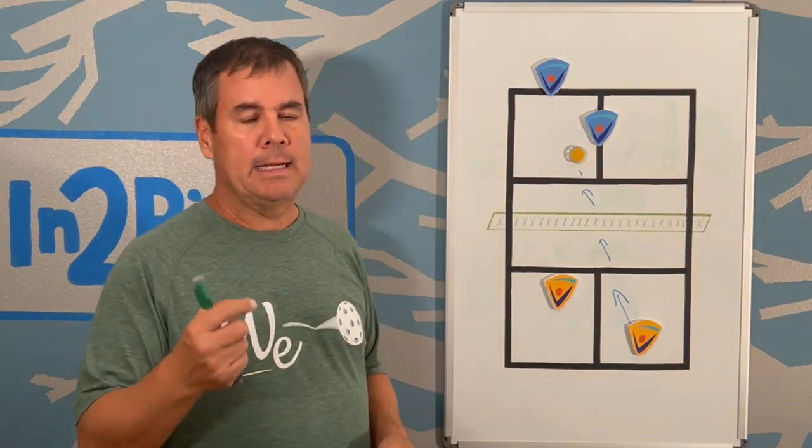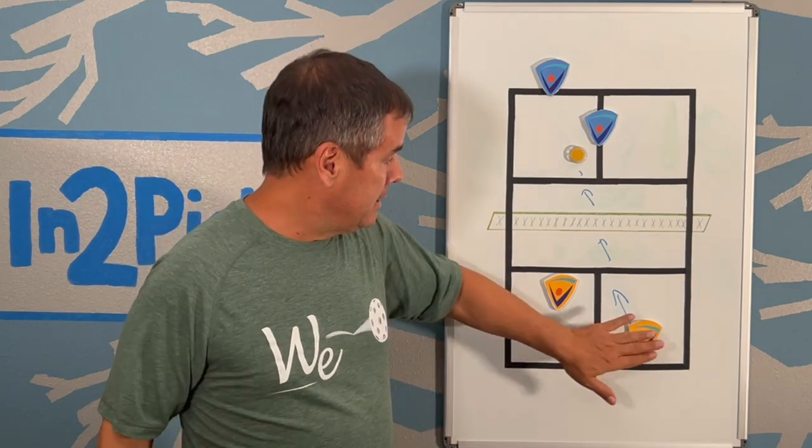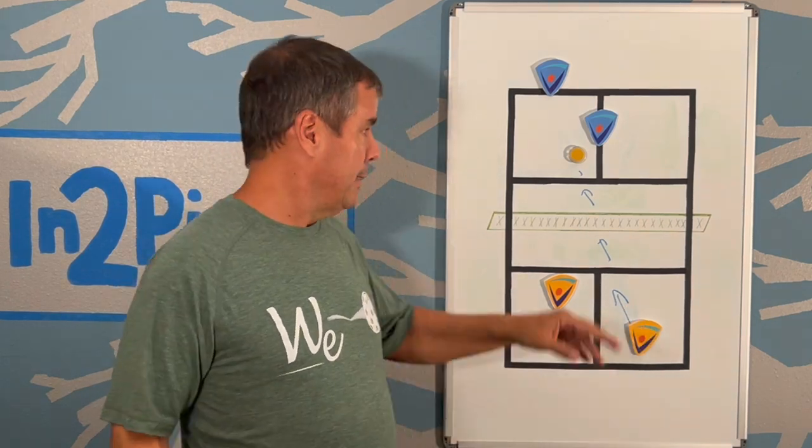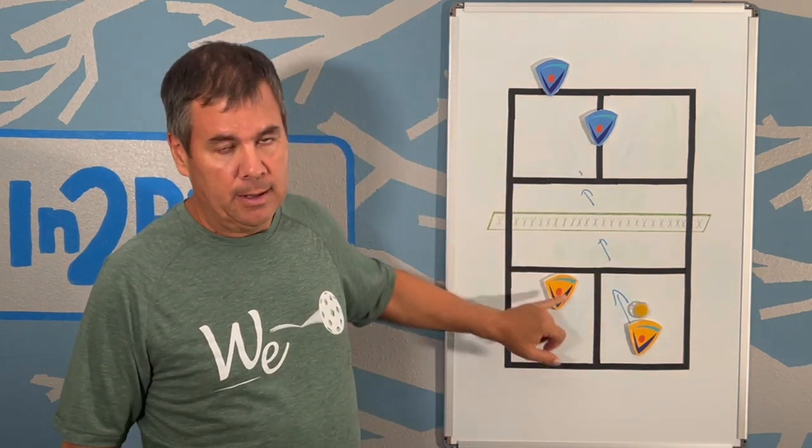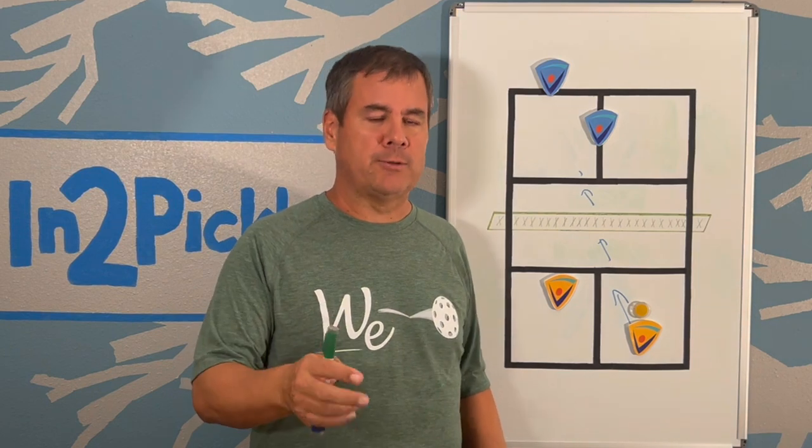The answer is that you should normally hit the shot to this player. And I'll go through why in a second, but you're going to want to hit the ball here rather than hitting it here. And there's a few reasons for that.